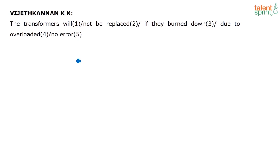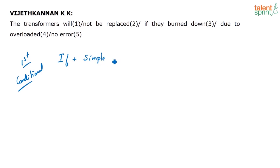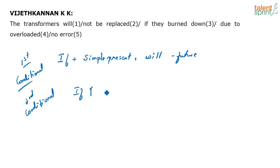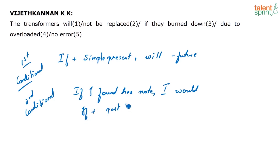Keep this in mind. Let me quickly go over the forms for second and third conditional since somebody asked. First conditional: if plus simple present, then will plus future — 'if this happens, something else will happen.' Second conditional: if plus past tense, then would plus base form of the verb. For example, 'If I found her note, I would give her a call.'